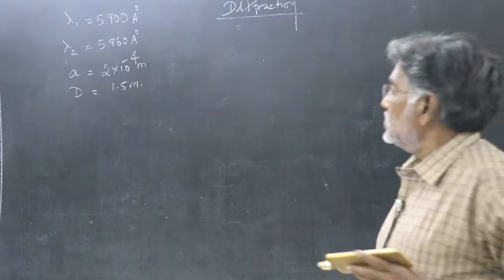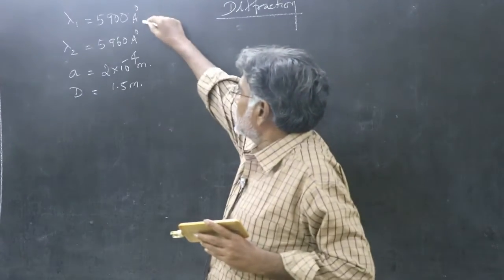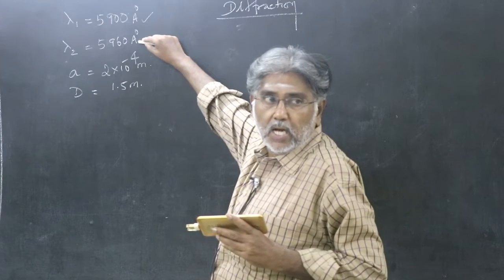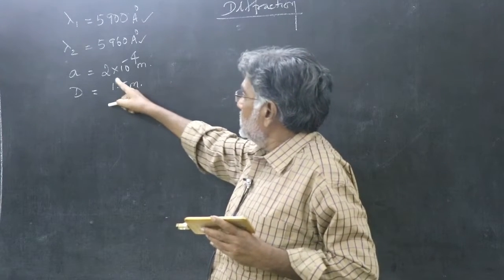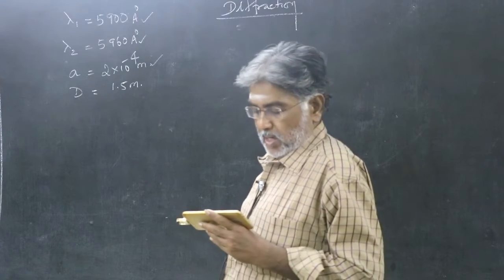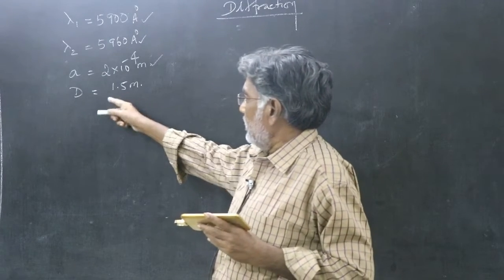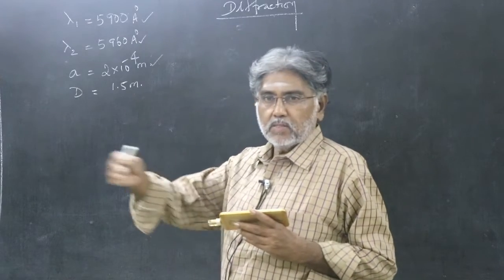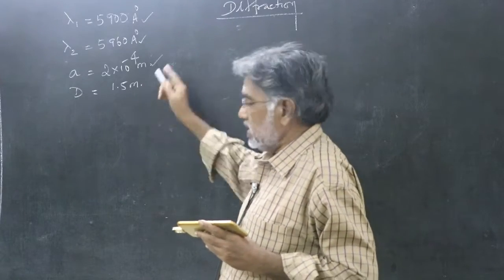So what are the two wavelengths? 5900 angstrom and 5960 angstrom. What is the slit width? 2 into 10 to the power of minus 4 meter. The capital D distance between the plane of the slits and the screen? 1.5 meter.